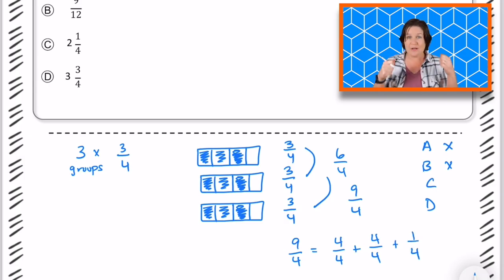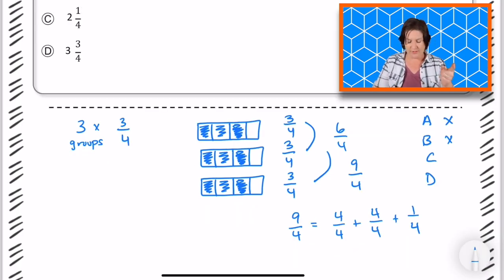So we can decompose or break down 9/4 into 4/4 plus 4/4 plus 1/4. Now 4/4 is 1 whole, and 4/4 is 1 whole. Therefore, we have 2 wholes and 1/4. So it would not be 3 3/4, which is D, it would be C.